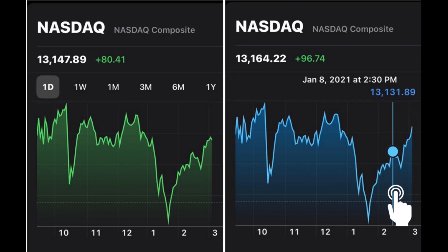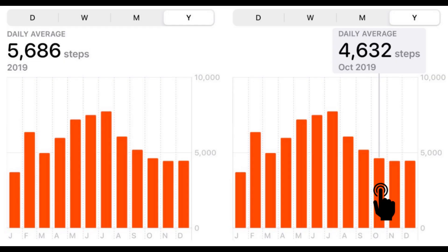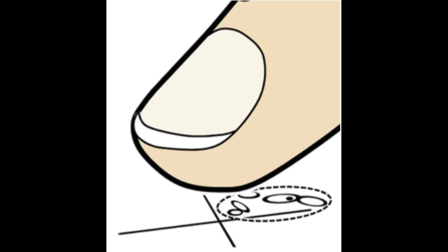Data visualizations are becoming more commonplace on smartphones and other mobile devices. People explore timelines of stocks and track their number of steps in health apps. But as we display more data on these 1D visualizations, it becomes increasingly difficult for users to reliably select items because tap selection is imprecise and the finger occludes part of the screen.